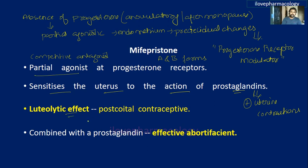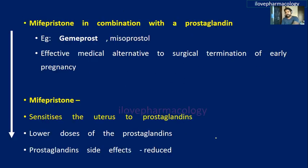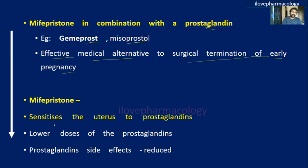The luteolytic effect is utilized as a post-coital contraceptive pill. It can be combined with prostaglandins — such as gemeprost and misoprostol — to be effective as an abortifacient. This combination becomes an effective medical alternative for the surgical termination of early pregnancy.